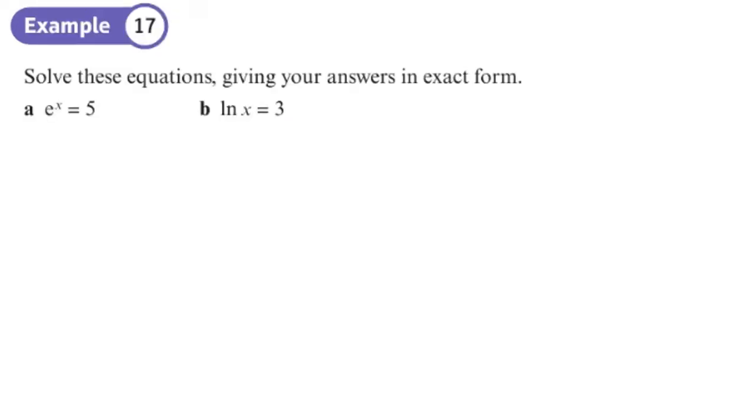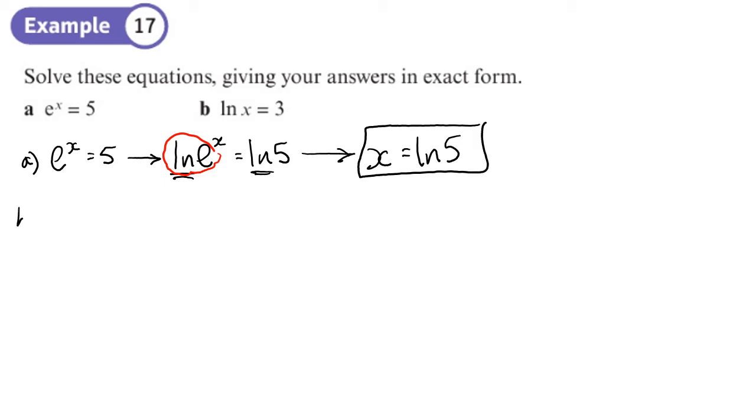So the first one here, you want to solve these equations. So a is e to the x equals five. So you put a log in front of both sides. Now because we've got the e and the log right next to each other, they cancel out. So we're just left with x equals log five. That's the exact answer. So we don't need to type that in on our calculator and write this one down.